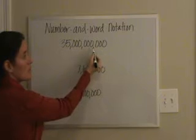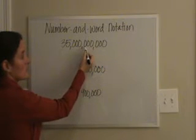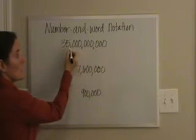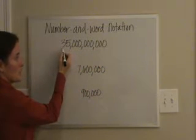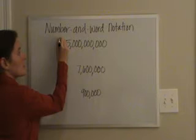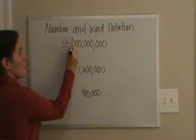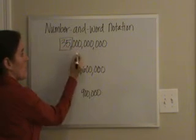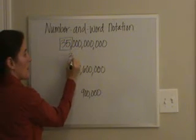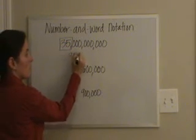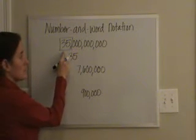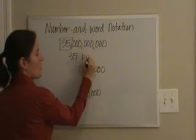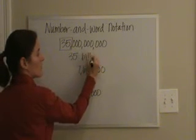Here's the hundreds, thousands, millions, and billions. We circle the important numbers and we bring them down. Since this is the billions section, it's 35 billion.